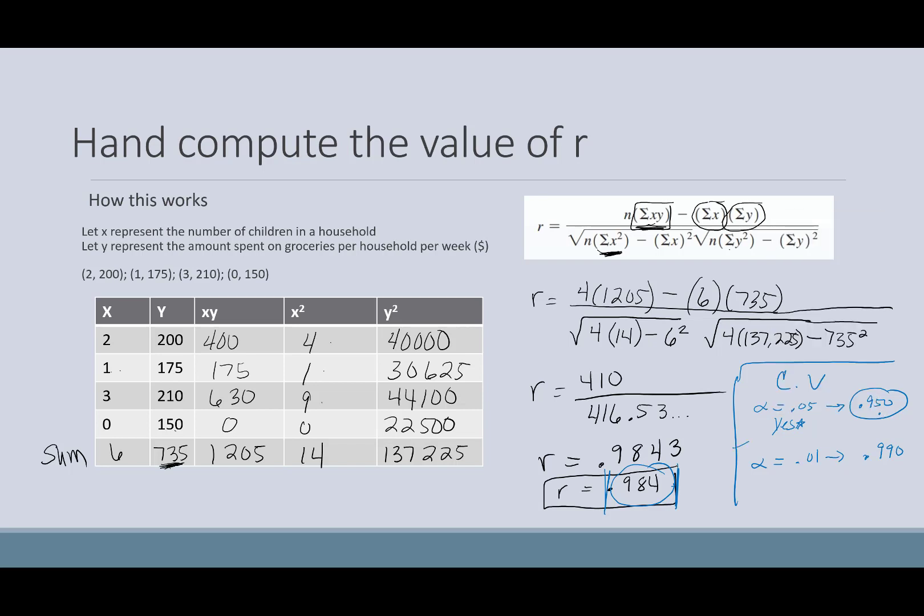Now, if I'm using an alpha of 0.01, my critical value is 0.990. Well, when I compare that to the absolute value of my computed value, my computed value is smaller than my critical value. So if my significance level is 0.01, I do not have evidence to say that there is a correlation between the two.